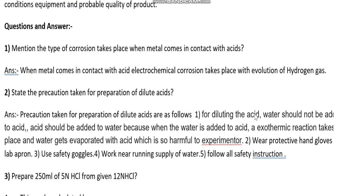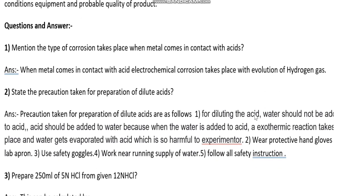Question and answer. Question number one: mention the type of corrosion that takes place when metal comes in contact with acid. Answer: when metal comes in contact with acid, electrochemical corrosion takes place with evolution of hydrogen gas.